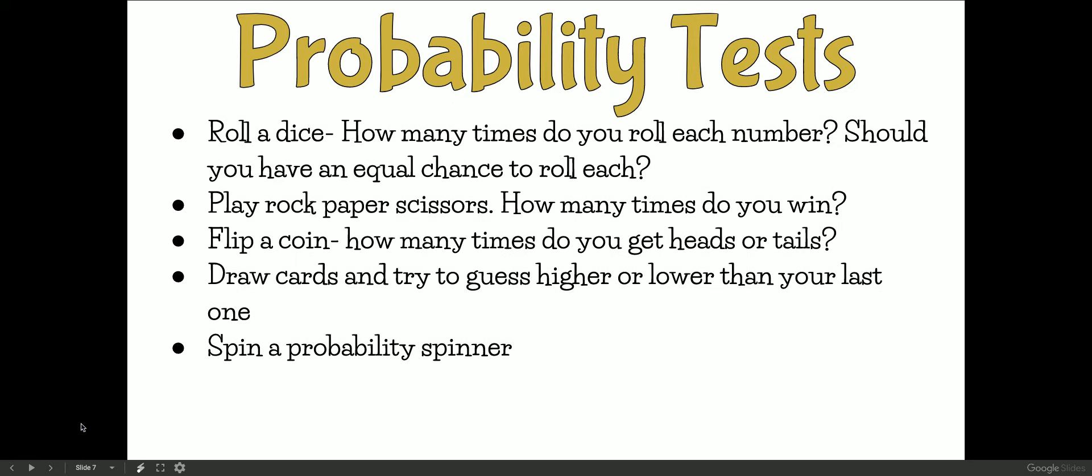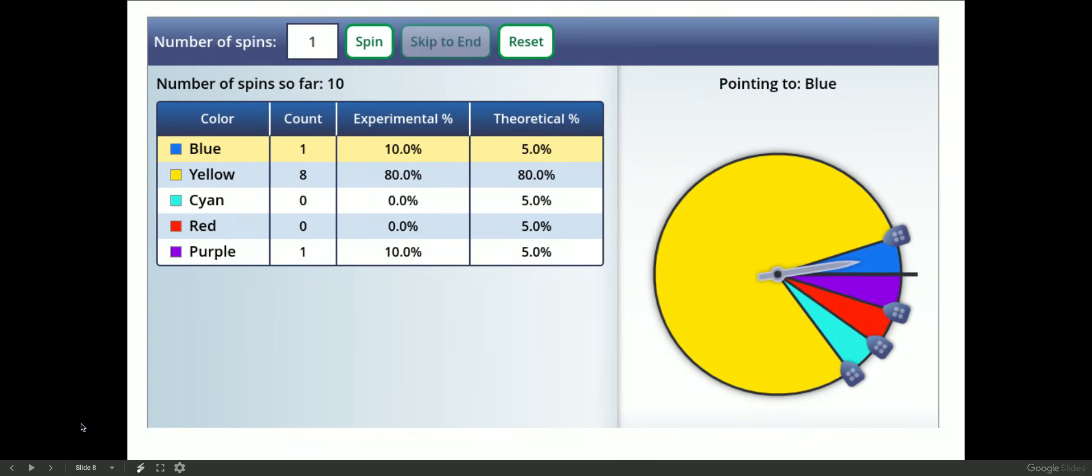So this is an example of a probability spinner. If you look at this spinner, I've made it so that yellow is really really big and all the others are small, which means that we should have a higher chance or it's more likely to spin yellow than the other colors. And then it's equally likely that you'd spin your blue, your purple, your red, and your cyan. But when I spun them ten times, I got eight yellows, one blue, one purple, but no reds or cyans, because probability is a guess or a chance of something happening, but it's not necessarily gonna happen when we do it.